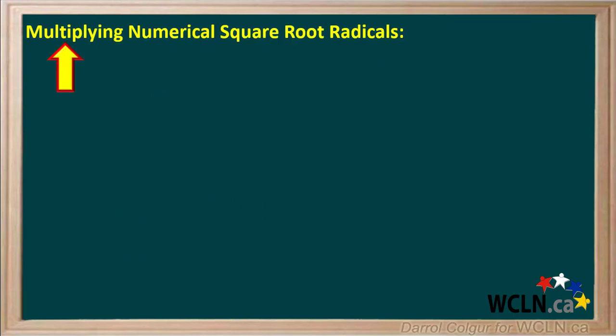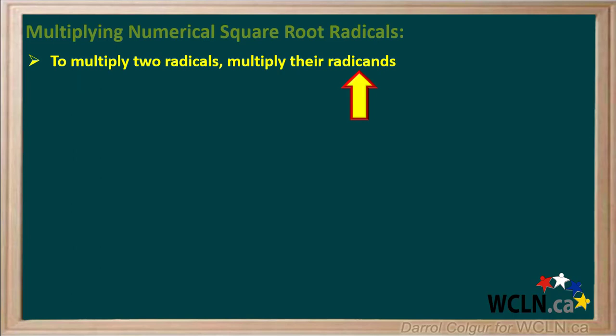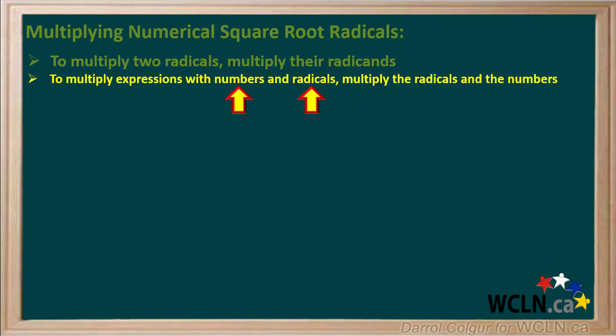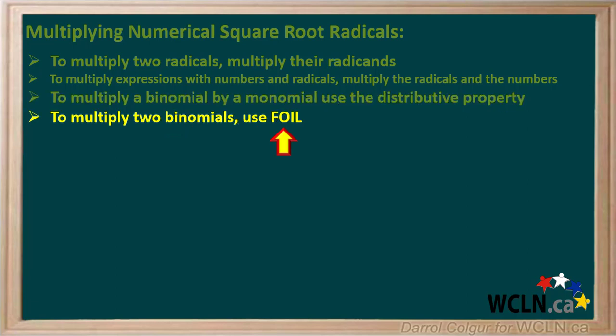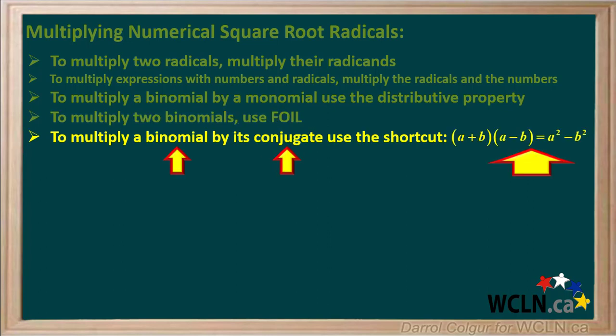To summarize the main points: to multiply two radicals with the same index, simply multiply their radicands. To multiply expressions with numbers and radicals, multiply both the radicals and the numbers. To multiply a binomial or any other polynomial by a monomial, use the distributive property. To multiply two binomials, use FOIL. And finally, to multiply a binomial by its conjugate, use the shortcut: a plus b times a minus b equals a squared minus b squared.